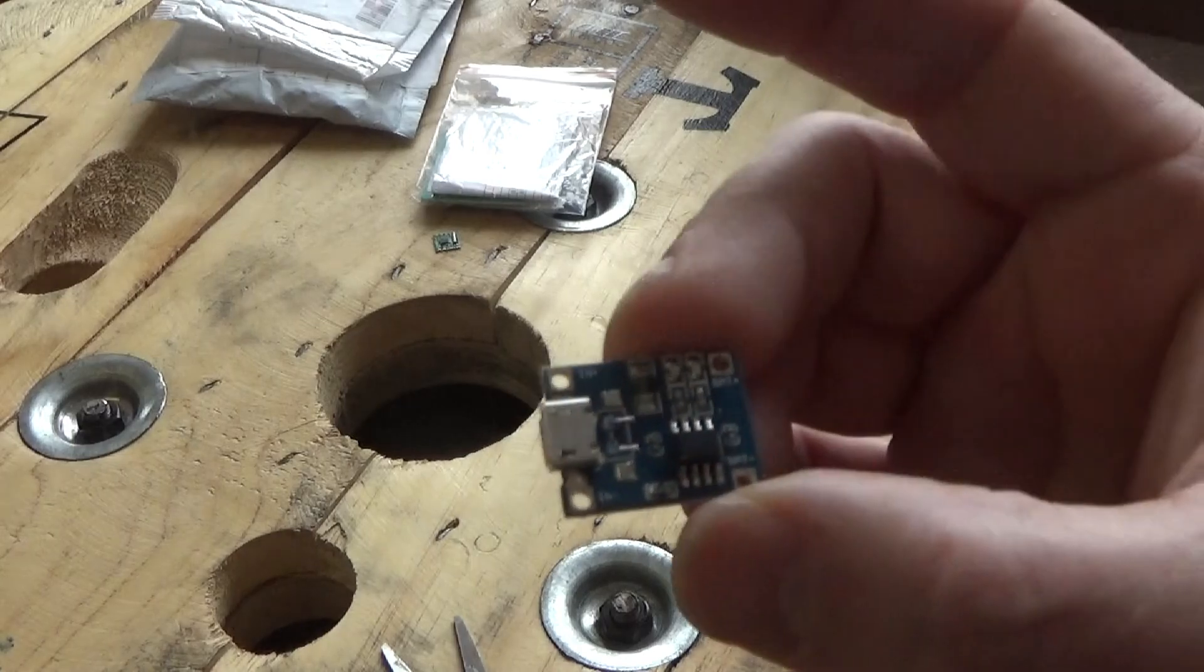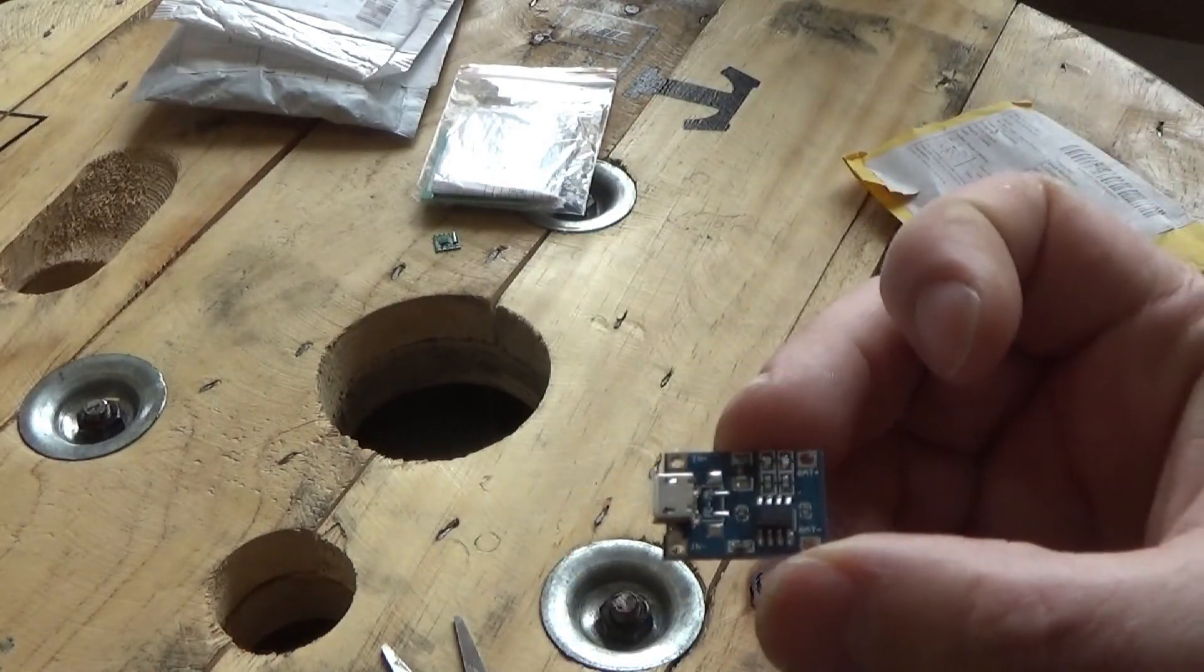This is a USB charging device for I think an 18650 battery. It has battery input and output and a USB port. There's battery in and out and a little micro USB port. I think it's an 18650 battery charger slash power bank controller, which is really neat.